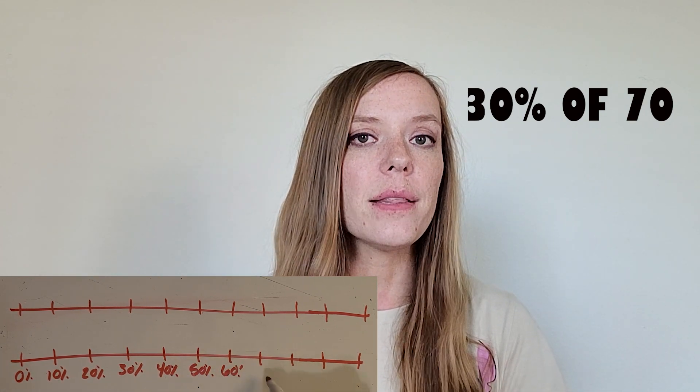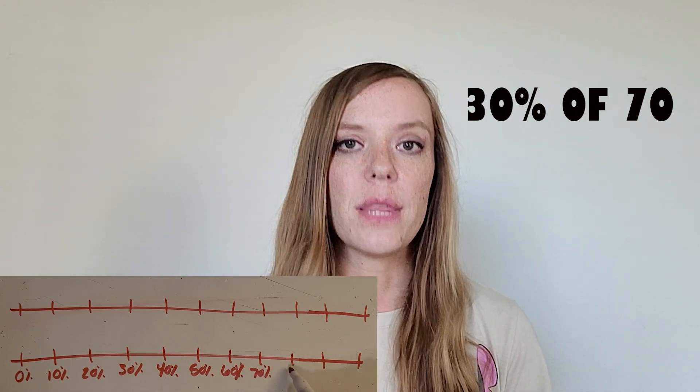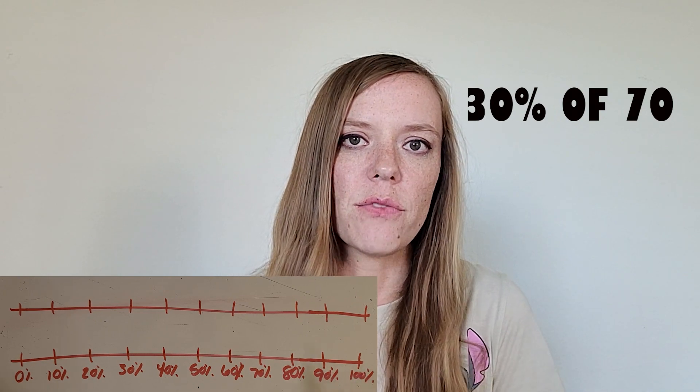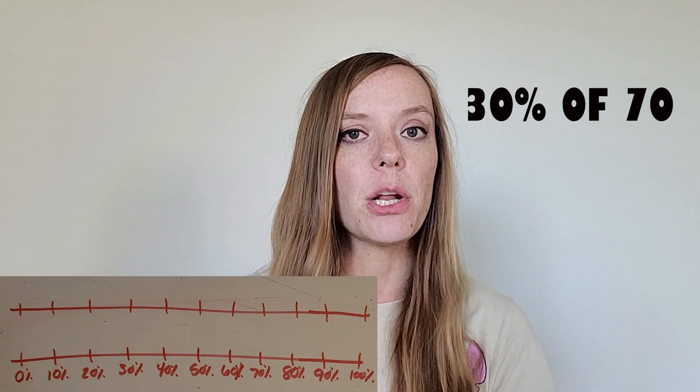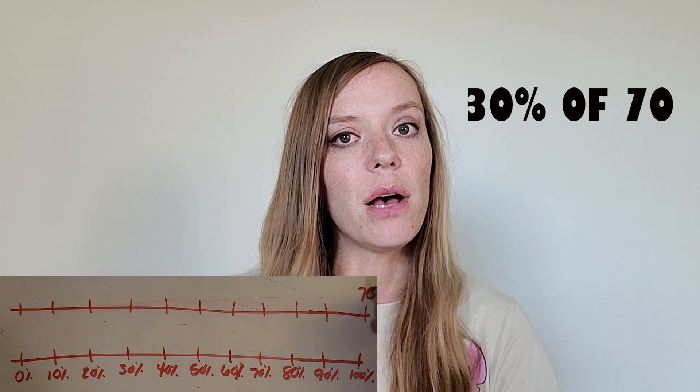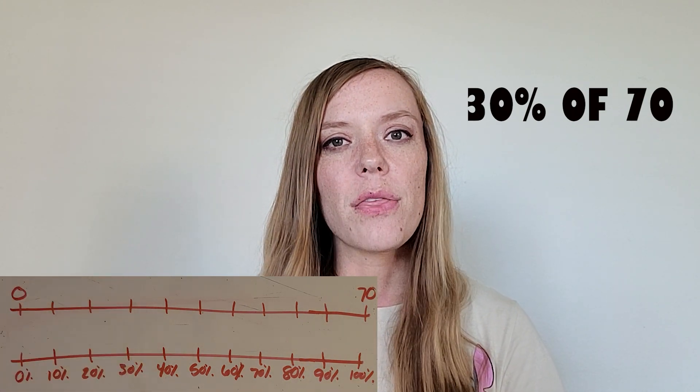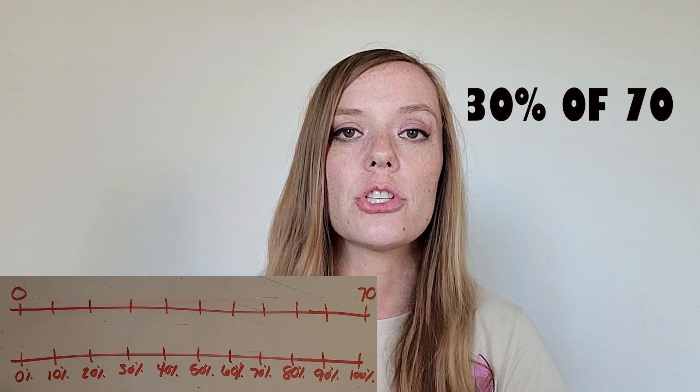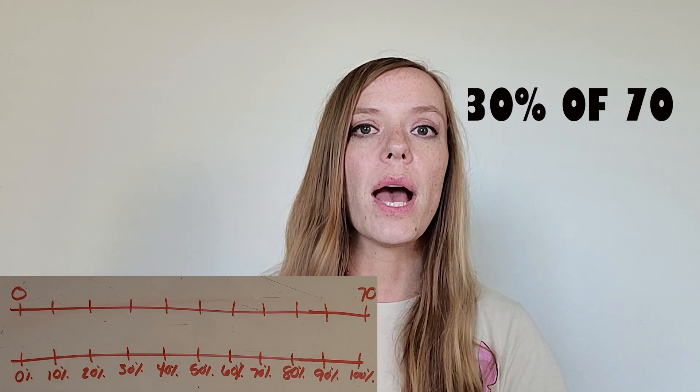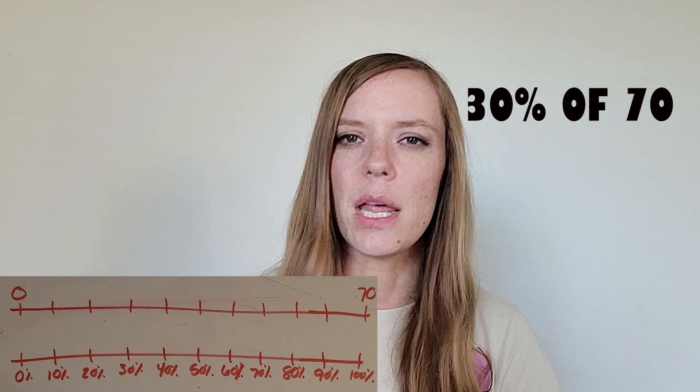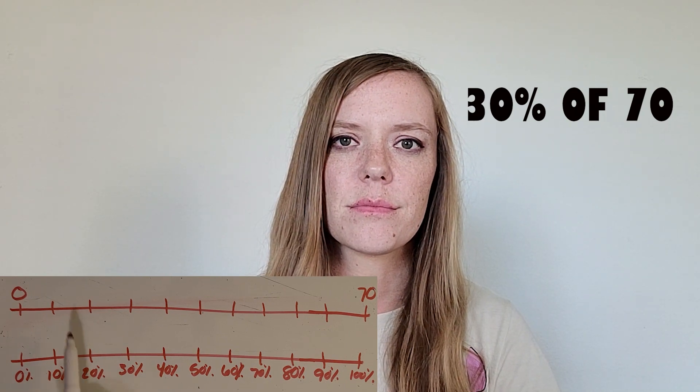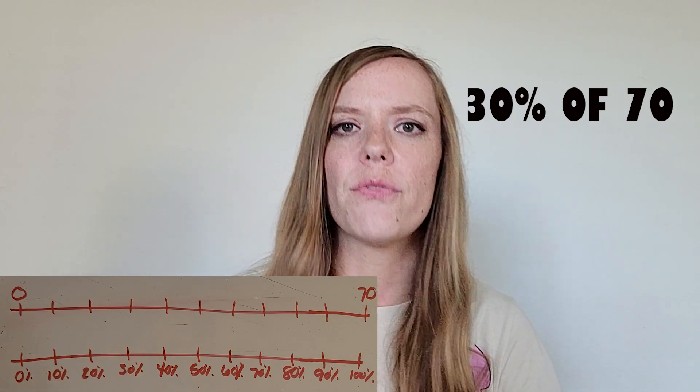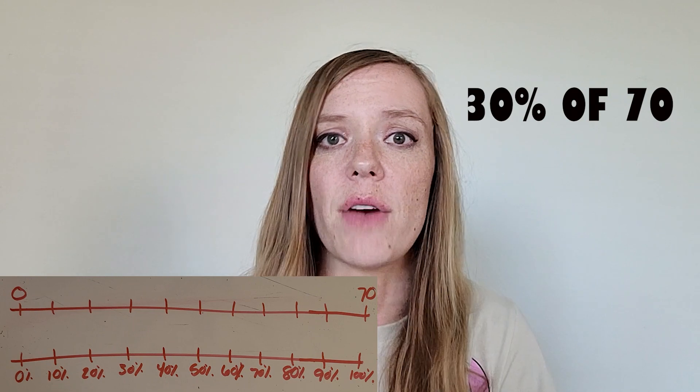On the other number line we're going to think about the 70. So 100 percent of 70 is of course the full 70, right? We're going to put 70 right above 100 percent. Now we've got to think about how on my percent number line I broke it up into 10 chunks. So how can I break up 70 into 10 parts? That's just a division problem of 70 divided by 10.